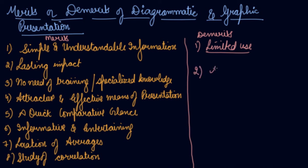Second demerit is misuse. Diagrams may be misused for false projections of statistical facts, as is easily done in the case of advertisements.